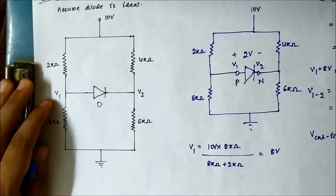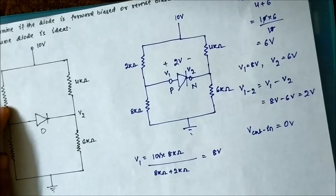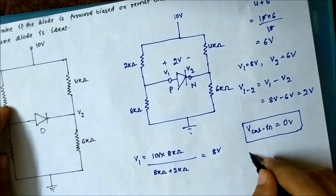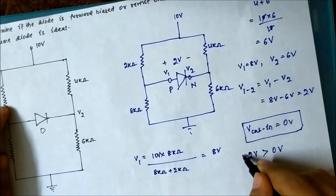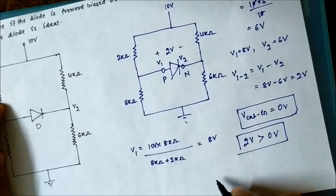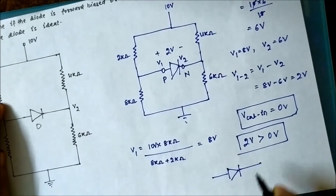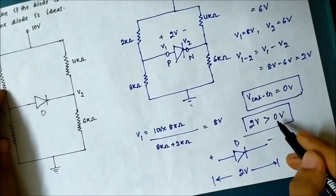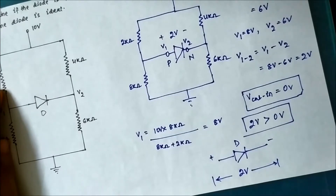Since the diode is ideal, the type — silicon or germanium — is not relevant, but any ideal diode has a cutting voltage of zero volts. The voltage across the diode is two volts. Since two volts is obviously greater than zero volts, the diode in this circuit will be forward biased. This two-volt is sufficient to turn the diode on. Even if it had been a silicon or germanium diode with cutting voltages of 0.7 volt and 0.3 volt respectively, the diode would still have been forward biased.